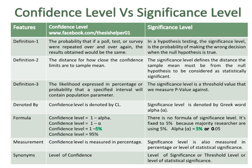Confidence level is denoted by CL while significance level is denoted by the Greek letter alpha. The formula of confidence level is subtracting alpha from 1. If the value of alpha is 5%, then by putting that value into the formula, we get a 95% confidence level. There is no formula for significance level.